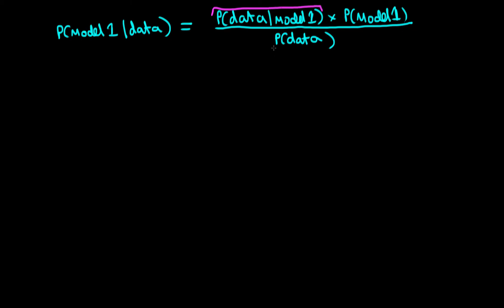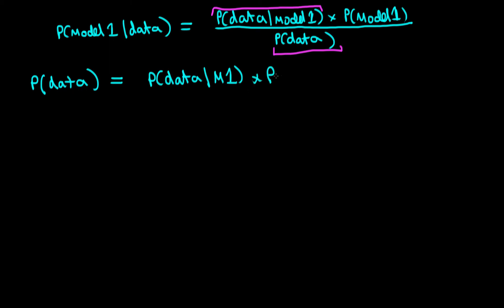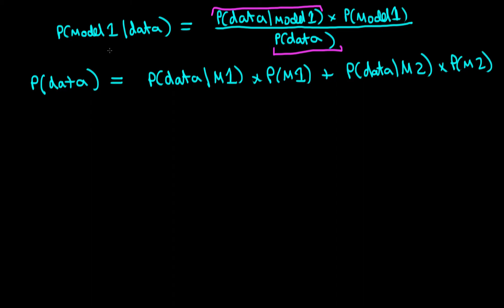But I haven't explained how to calculate the denominator term. The idea is that this is the marginal likelihood of our data across both models — a marginal density where I have marginalized over the choice of model. So the probability of our data is equal to the probability of our data conditional on model one times the prior probability of model one, plus the probability of our data conditional on model two — our marginal likelihood of model two — times the probability of model two. Importantly, this denominator term is the same whether I'm working out the posterior of model one or model two given the data.